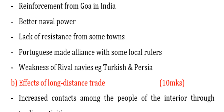Number five: lack of resistance from some towns — some coastal towns did not resist the Portuguese. Number six: the Portuguese made alliances with some local rulers, who assisted them in fighting the coastal town people. Lastly: the weakness of rival powers, specifically the Turkish and Persian forces.